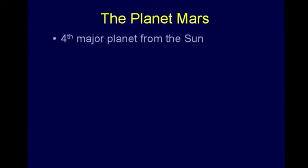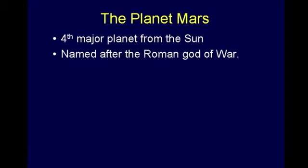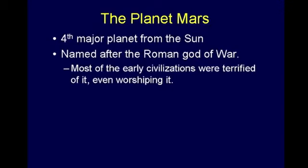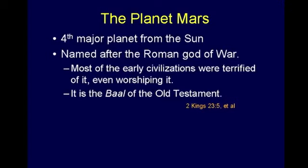We'll talk more about this when we get to Genesis chapters 6, 7, and 8 with Noah's flood, because some scientists believe the planet Mars had a role in Noah's flood. Mars is the fourth major planet from the Sun, named after the Roman god of war — that's why we speak of martial arts. Most early civilizations were terrified of Mars. Many of them worshipped Mars. When you read about Baal in the Old Testament — 2 Kings 23:5 and lots of other places — it can mean heavenly bodies in general, but very often it appears to specifically refer to the planet Mars.